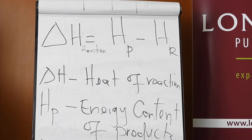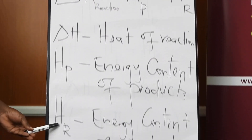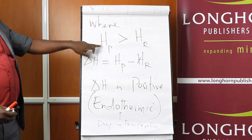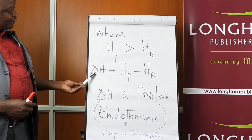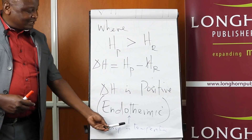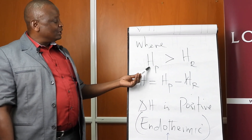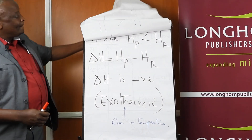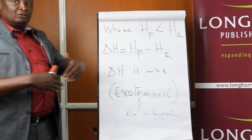Delta H is the heat of reaction, H_P is the energy content of products, and H_R the energy content of the reactants. If the energy content of the products is greater than that of the reactants, substituting into this expression gives delta H being positive. That means for an endothermic reaction there is a drop in temperature, because the products will have gained energy — the products will have more energy than the reactants, so delta H will be positive in value.